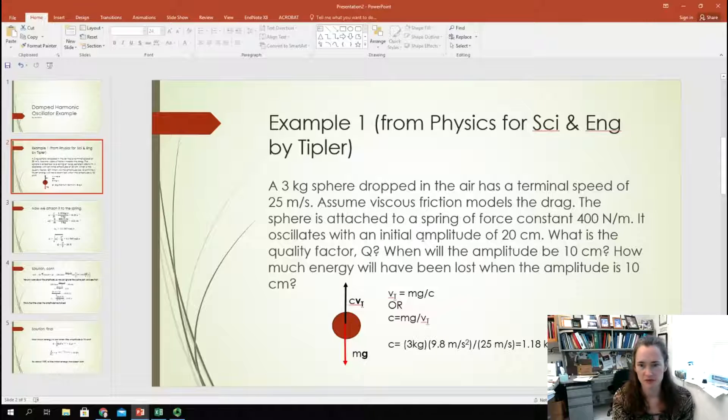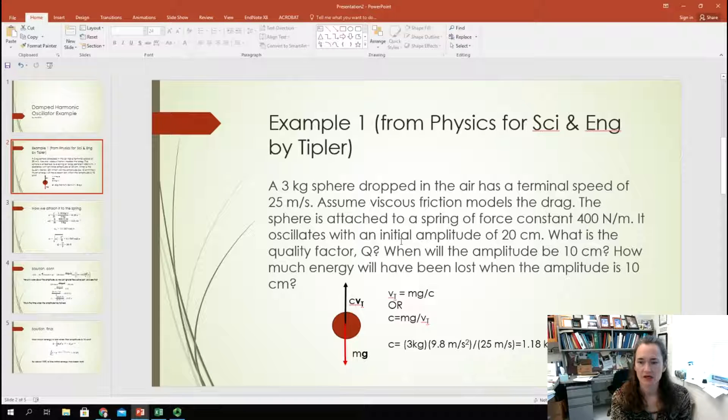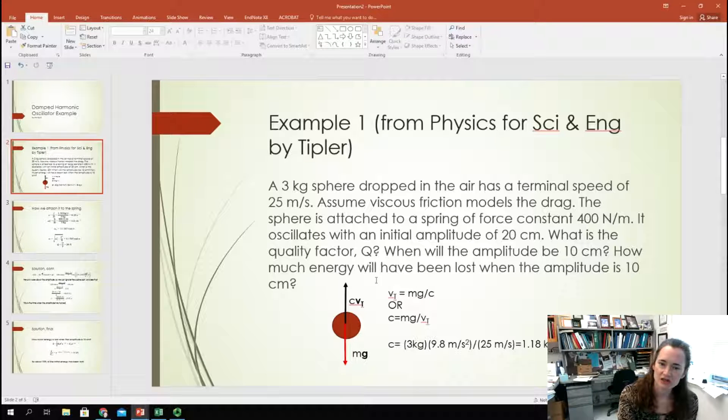The sphere is attached then later to a spring of force constant 400 newtons per meter. It oscillates with an initial amplitude of 20 centimeters. So, what's the quality factor Q? And when will the amplitude be 10 centimeters? And how much energy will have been lost when the amplitude is 10 centimeters?